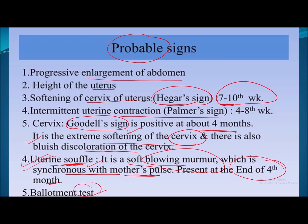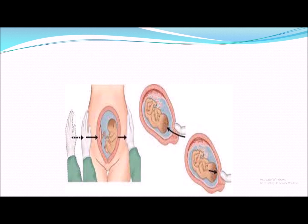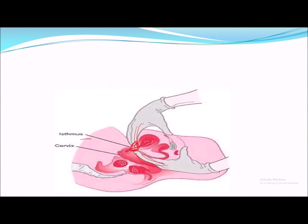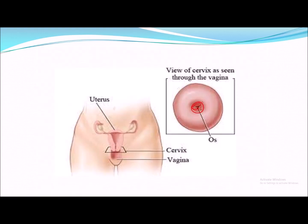The ballottement test involves tapping the lower end of the uterus, causing the fetus to toss about in the amniotic fluid — this is known as external ballottement. It is the phenomenon of the enlarging fetus tossing inside the amniotic cavity. These are the probable signs of pregnancy.